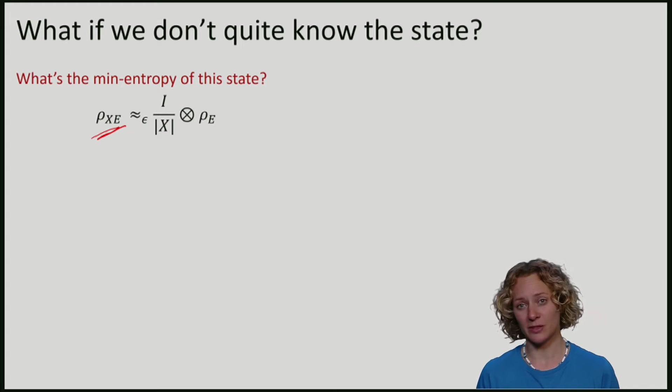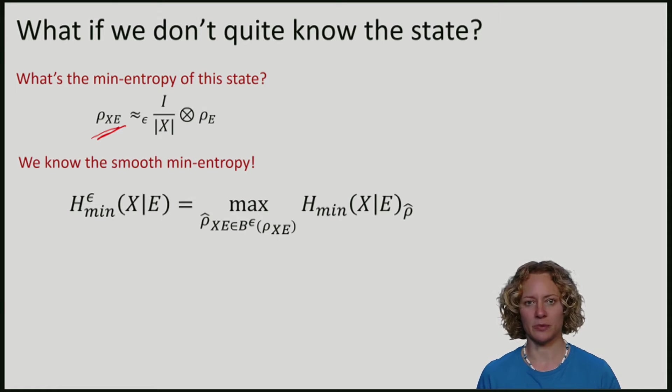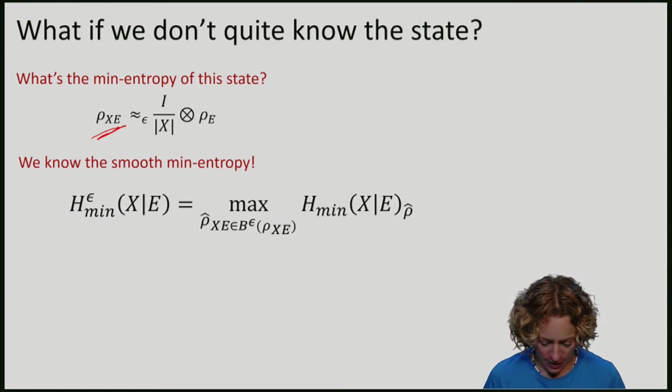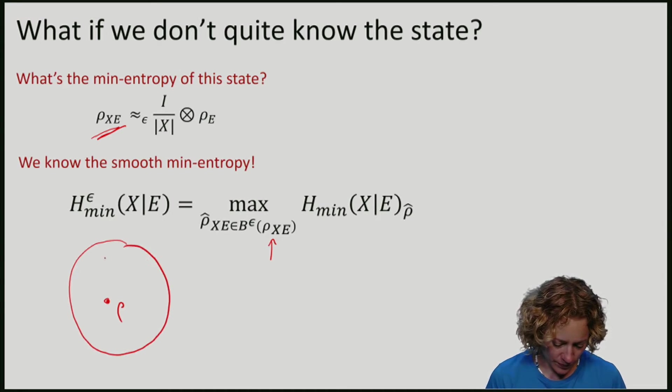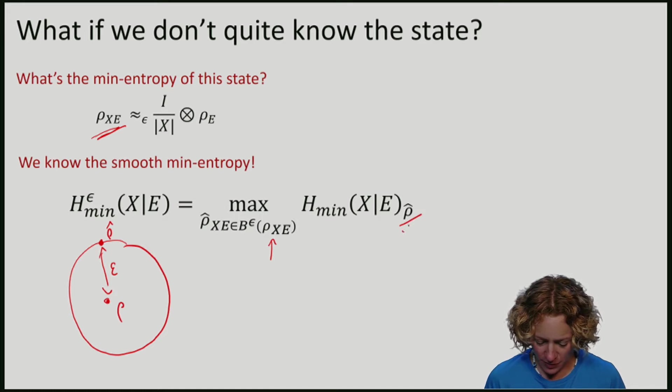The smooth min-entropy of x and e is defined as the maximum over states in an epsilon ball. So instead of considering the entropy of my original state, rho, I go in an epsilon ball around at a distance epsilon to some state, rho hat. And I consider the min-entropy of that state.